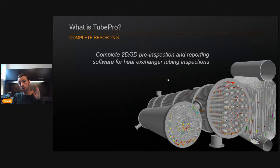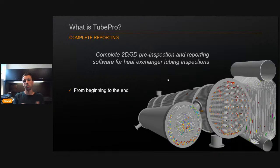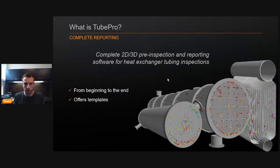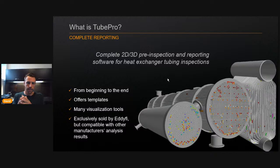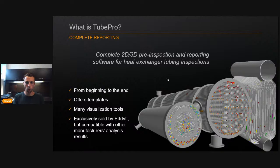TubePro is a complete 2D and 3D pre-inspection and reporting software for heat exchanger tubing inspections. It covers everything from the beginning to the end — starting with the tube list, all the way to the final PDF. It offers templates that users build within their company, so everyone does the same report every time. It includes visualization tools: charts, graphs, 3D models, 2D maps, and more. It's exclusively sold by Edify but compatible with other manufacturers' analysis results.